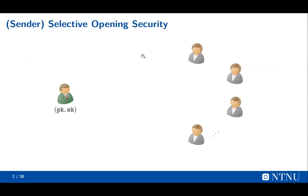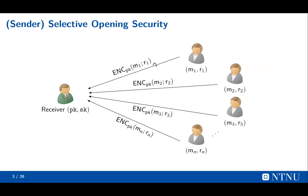In the PKE setting, we have a receiver, and the receiver has a public key and secret key. We also have lots of senders, and they can use the public key to encrypt the message with some randomness, and then send the ciphertext to the receiver.